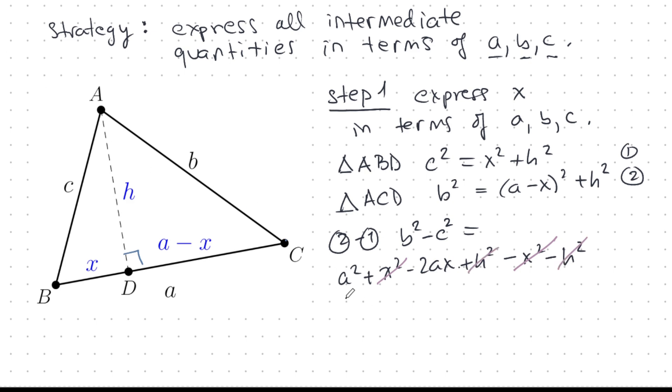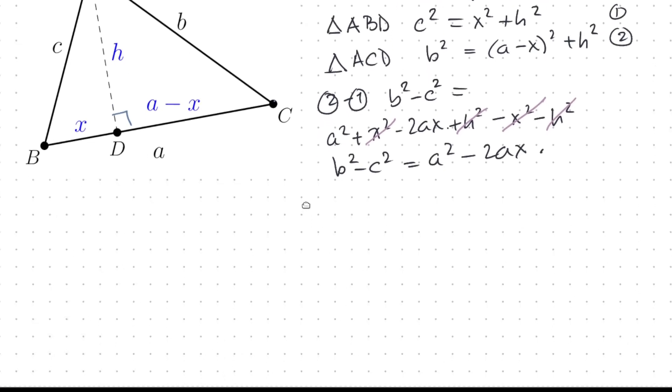And from this, I can now calculate X, find X. And how do I do that? Well, I have to move things around. Let's see if I can get this right. So, I'll move this to the left. 2AX is A squared minus B squared plus C squared. And that gives me X equals A squared minus B squared plus C squared over 2A.